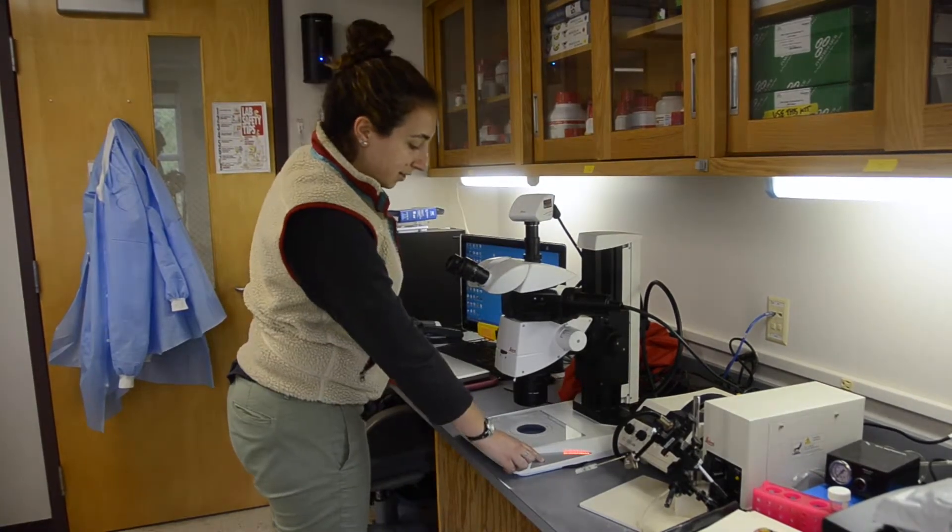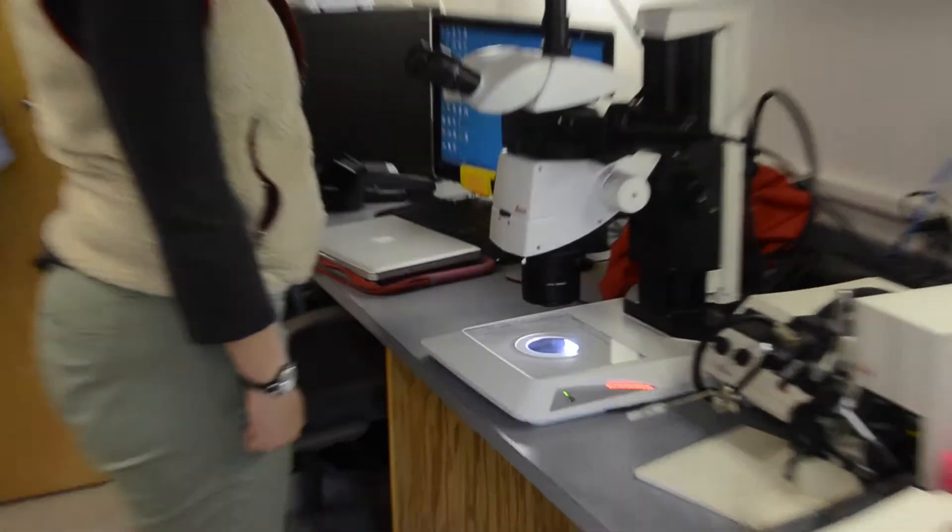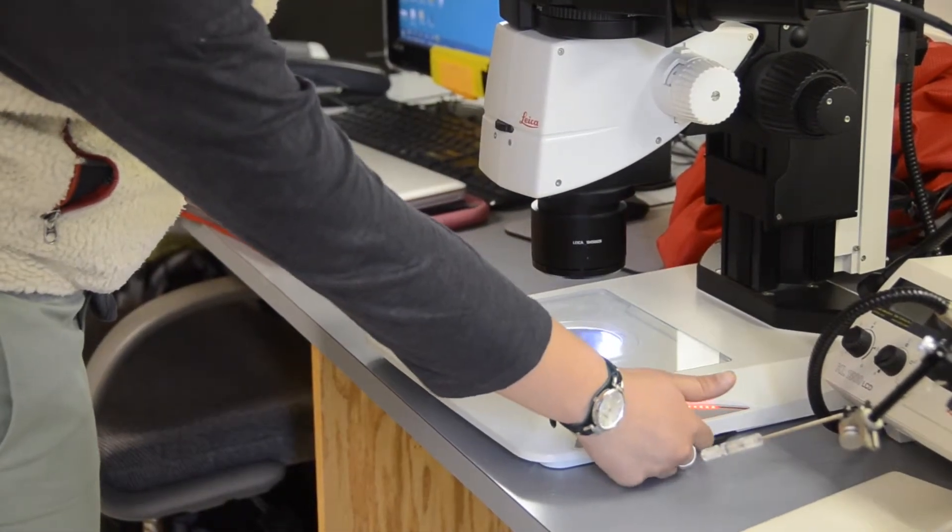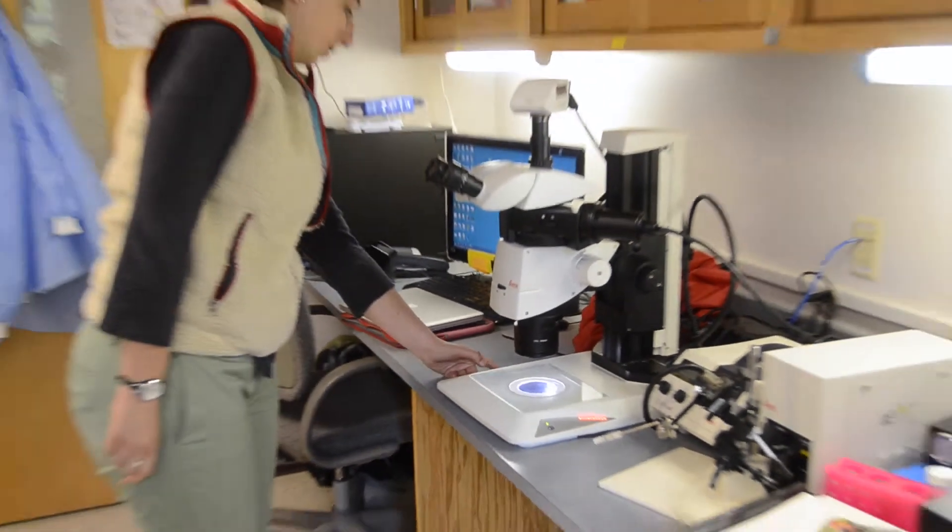Once you turn it on, you then also have to turn the light on. And then you can start adjusting the light with this knob here. And then on the left side, you can open and close.